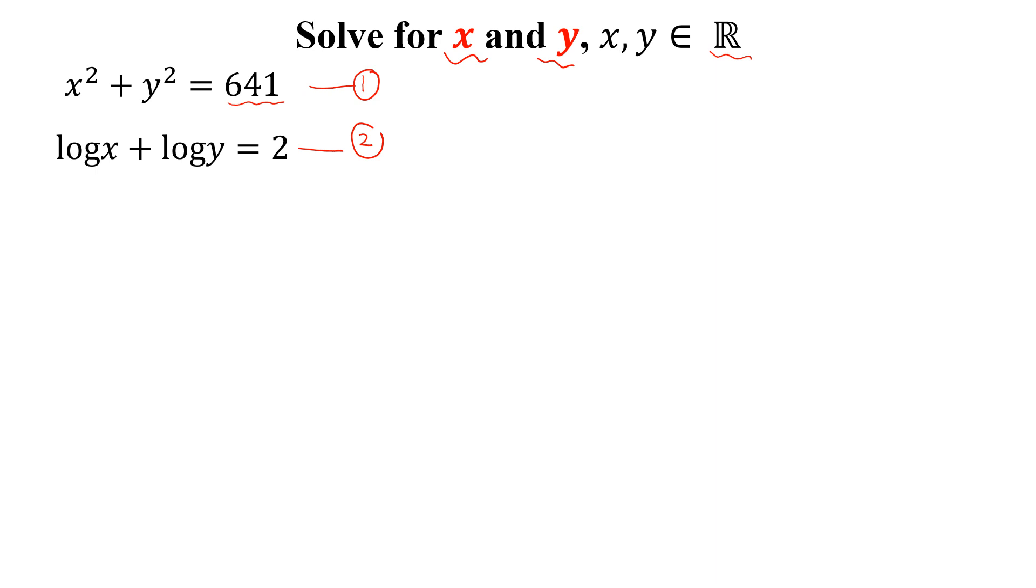How can we solve this? From equation 2, we can write log xy equal to 2 by using log property. Next we can write log xy equal to log of 100, and by taking antilog, we can write xy equal to 100.